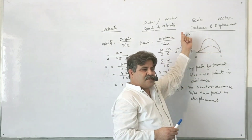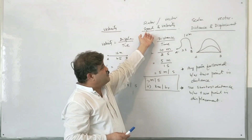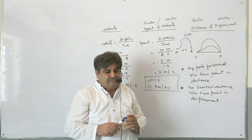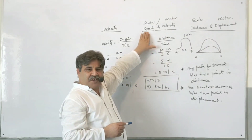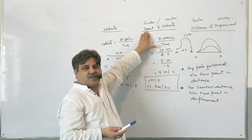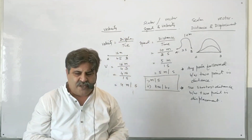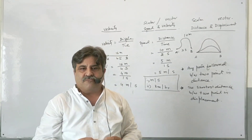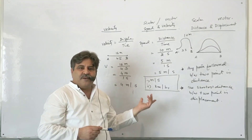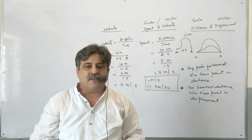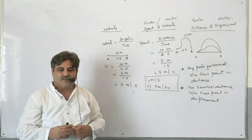I hope this lecture helps you understand scalar and vector quantities. Distance is a scalar, displacement is a vector. Similarly, speed is a scalar and velocity is a vector. In the next lectures we will discuss uniform speed, variable speed, uniform velocity, variable velocity, and most importantly, acceleration — the most important topic in kinematics. Thank you very much. Assalamualaikum.